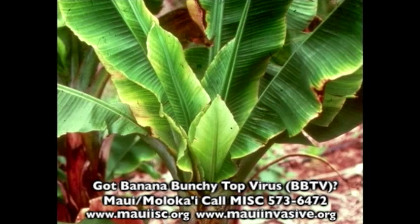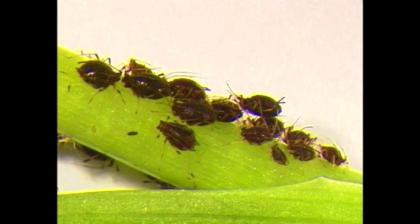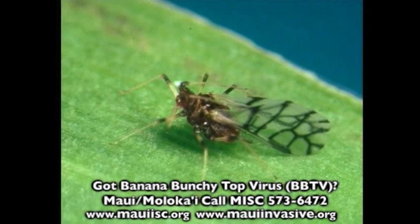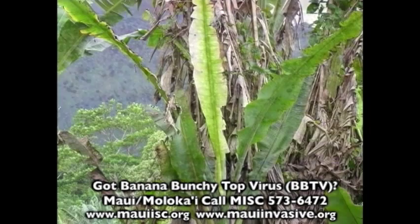Fruits, if they are even produced, are deformed and small. Tiny flying insects called banana aphids pick up and transmit the virus by feeding on infected plant sap.